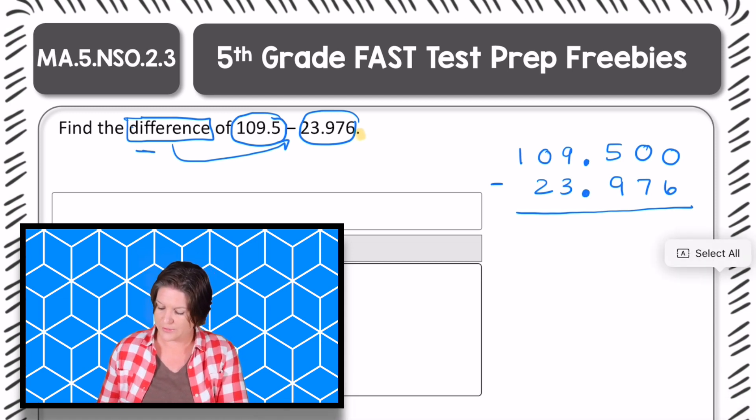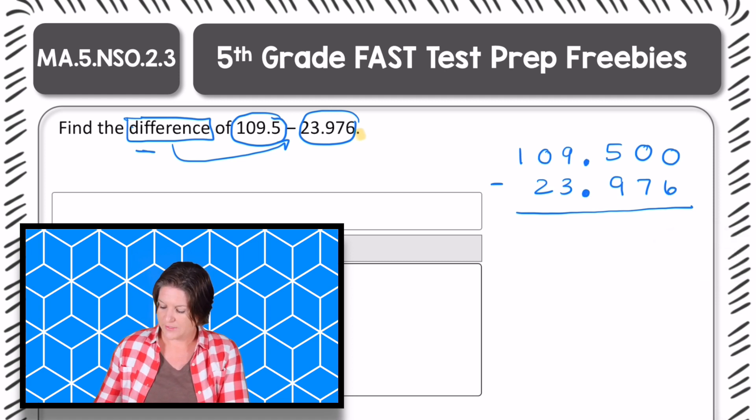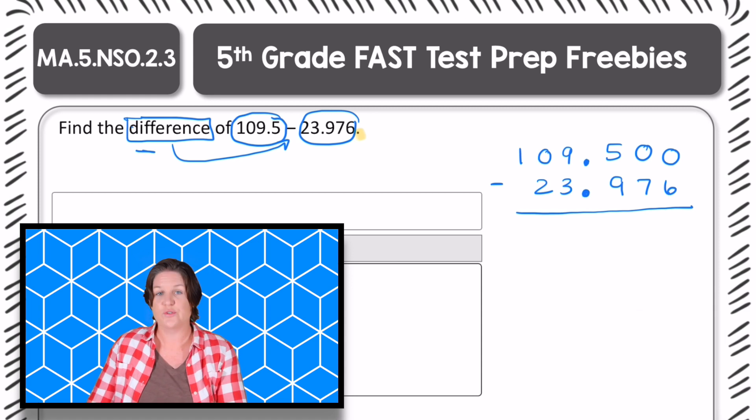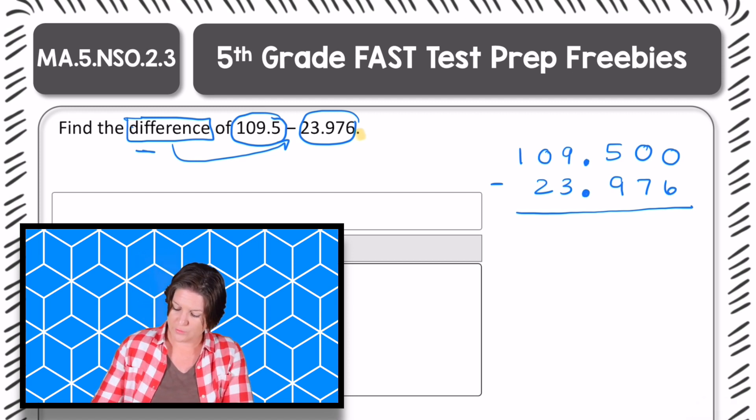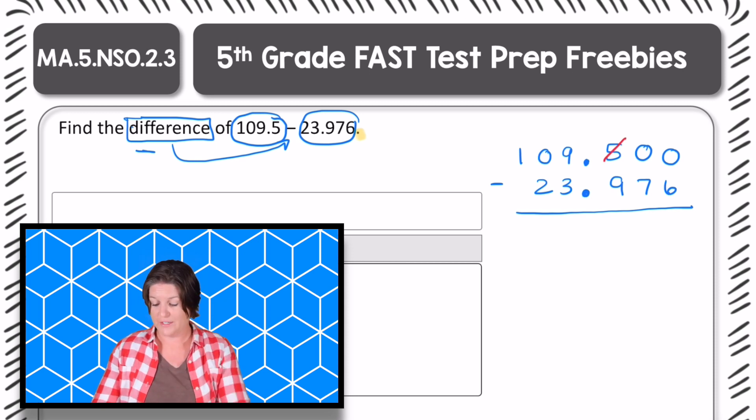I'm going to change my colors just to make it easier to see. And I'm going to start in the thousandths place. So zero thousandths minus six thousandths, well, I need to regroup, right? But if I look over here in the hundredths place, I don't have any digits to take from to regroup over into the thousandths. So let's go to the tenths place. There is a digit five there.